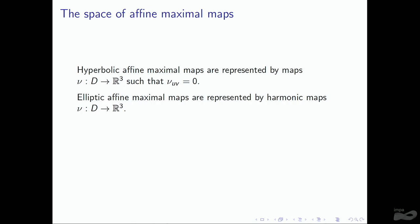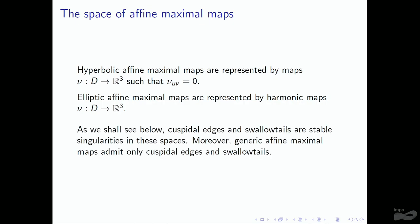In which space shall we analyze affine-maximal maps? Since they are represented by harmonic maps satisfying N_{UV} equals zero — the space of hyperbolic affine-maximal maps — and the space of elliptic affine-maximal maps is represented by harmonic maps in R³. As we shall see, cuspidal edges and swallowtails are stable singularities in these spaces. Moreover, generic affine-maximal maps admit only cuspidal edges and swallowtails.